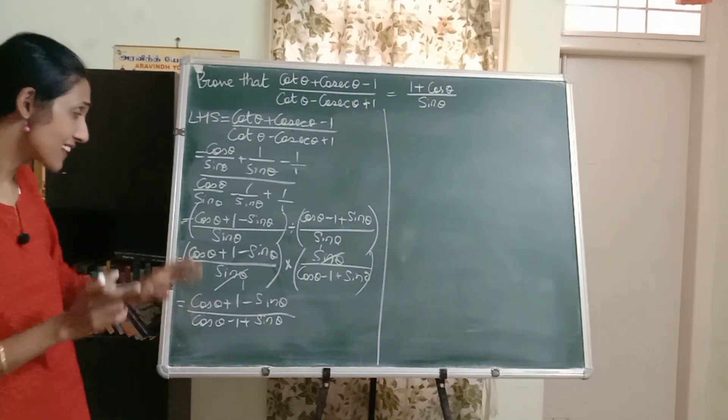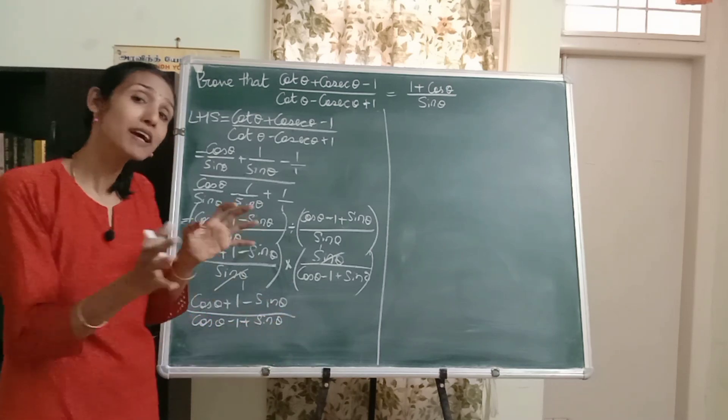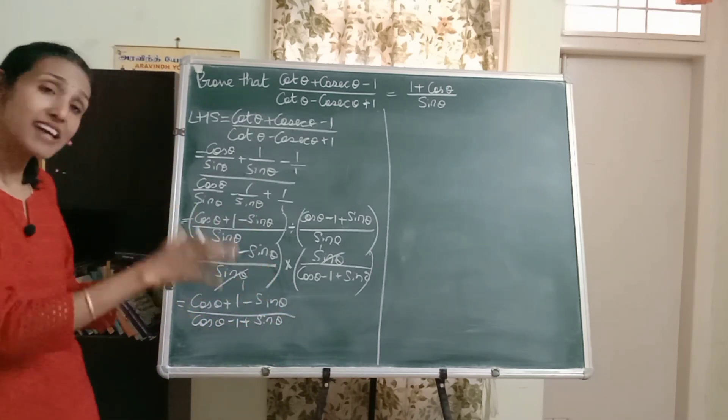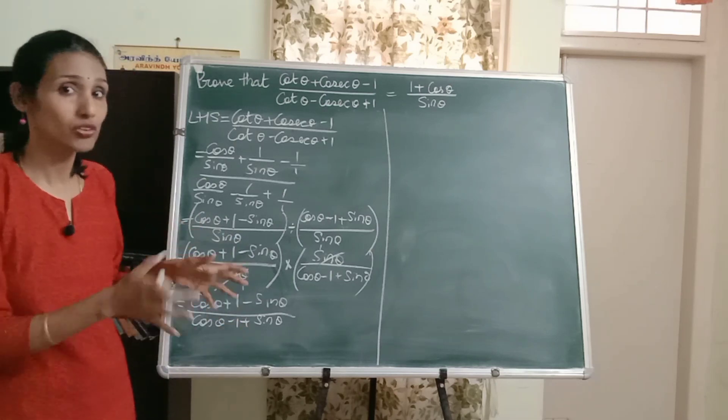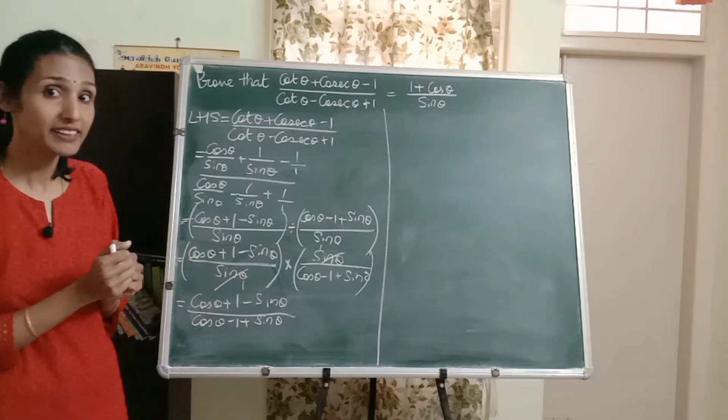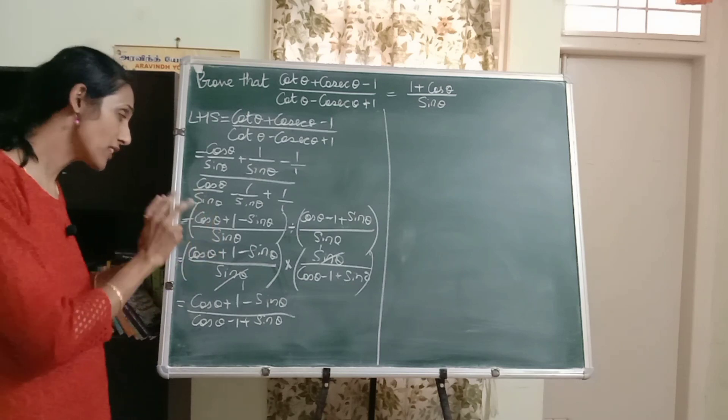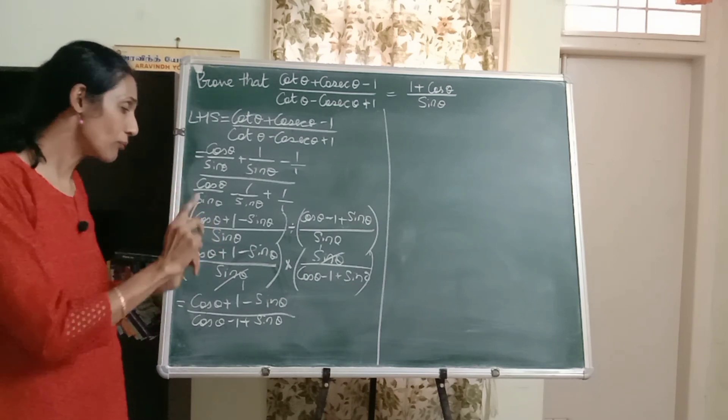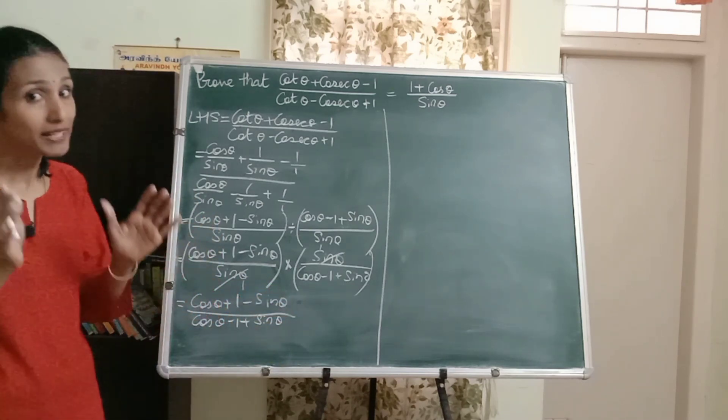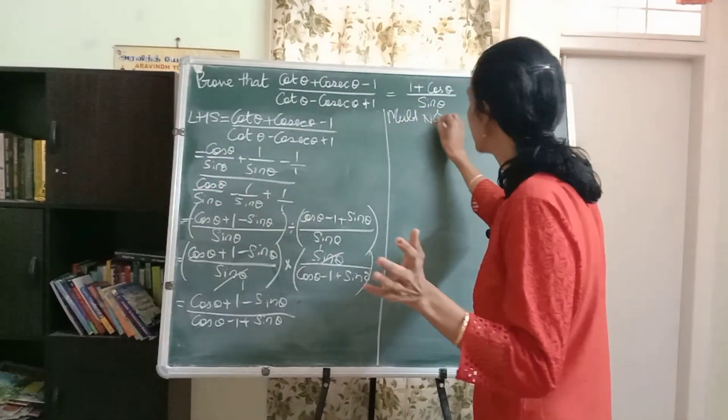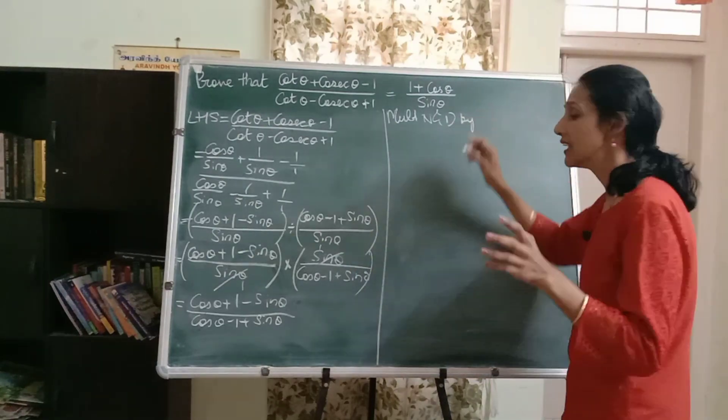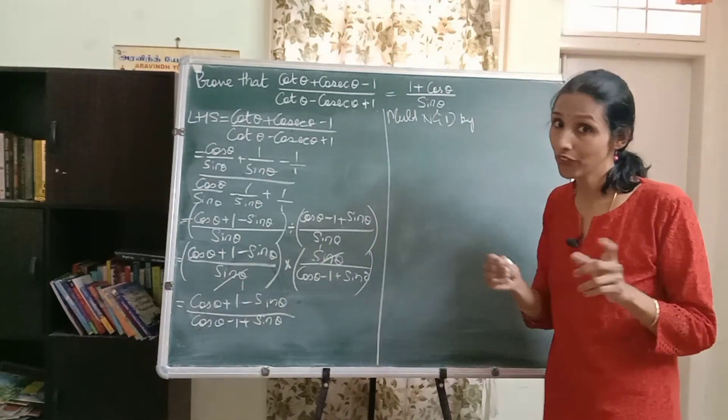So just remember that whenever you want sine square, cos square, try multiplying numerator and denominator by the same term. Now, so what are we going to do? Multiply numerator and denominator by sine theta or cos theta. What do you think? Now for that, let me again see what we want. We want sine theta in the denominator.